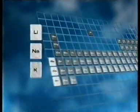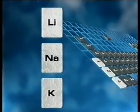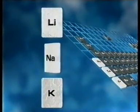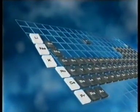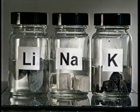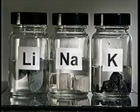Group one of the periodic table is a group of reactive metals. Lithium, sodium and potassium are at the top. These metals are so reactive they have to be stored under oil and need to be handled with care.